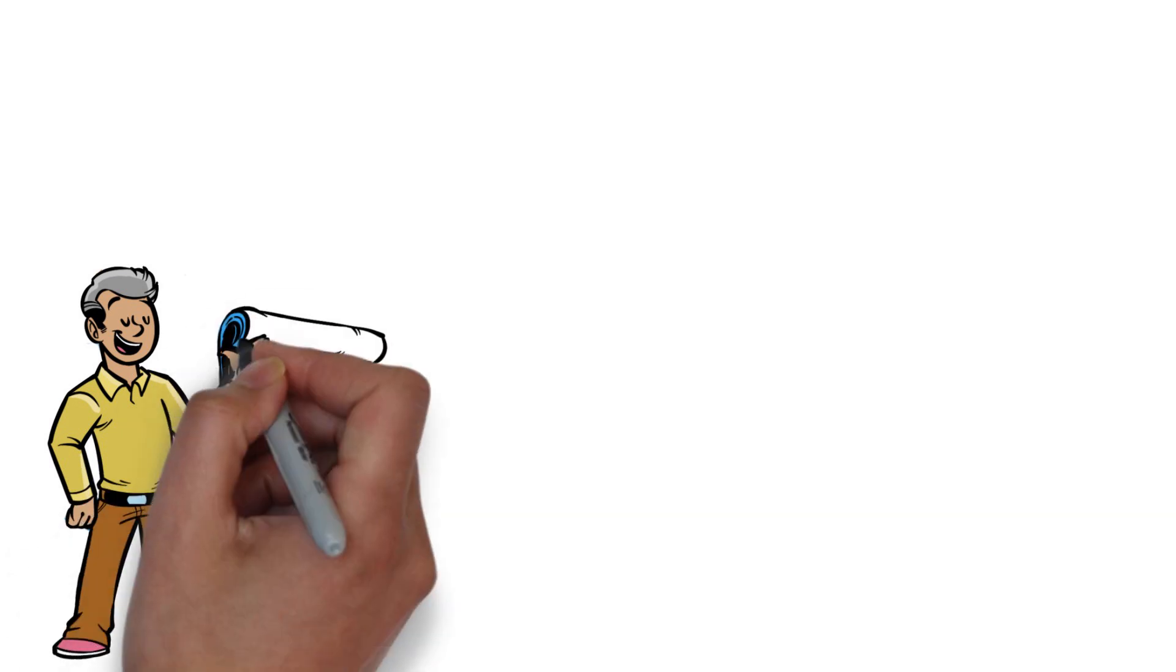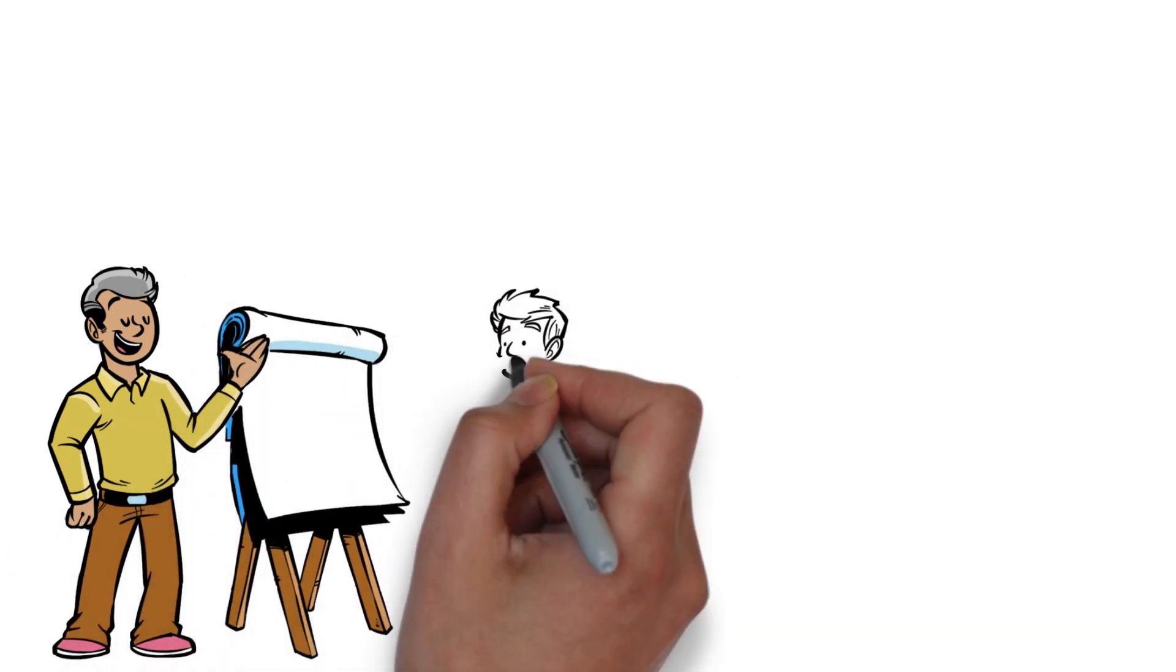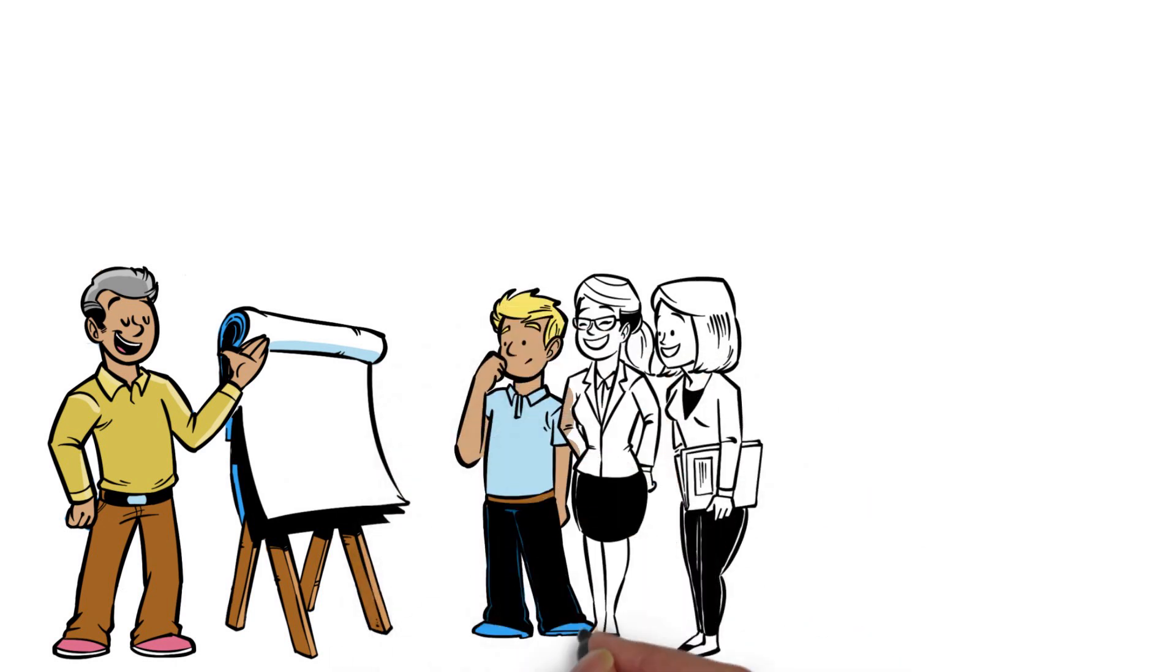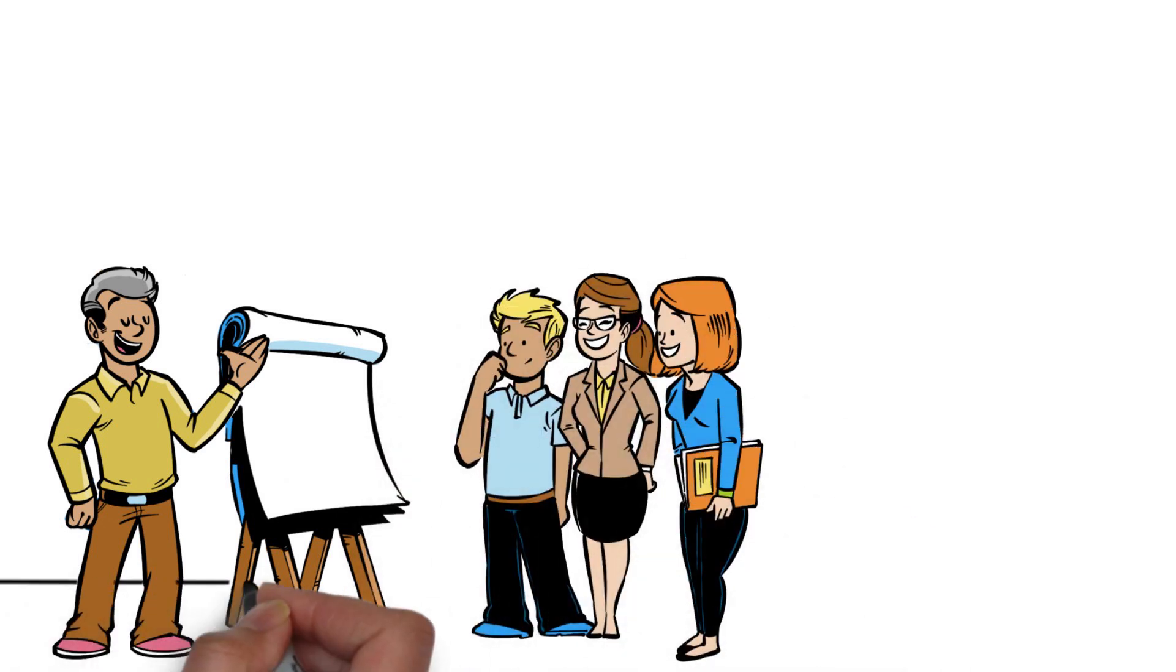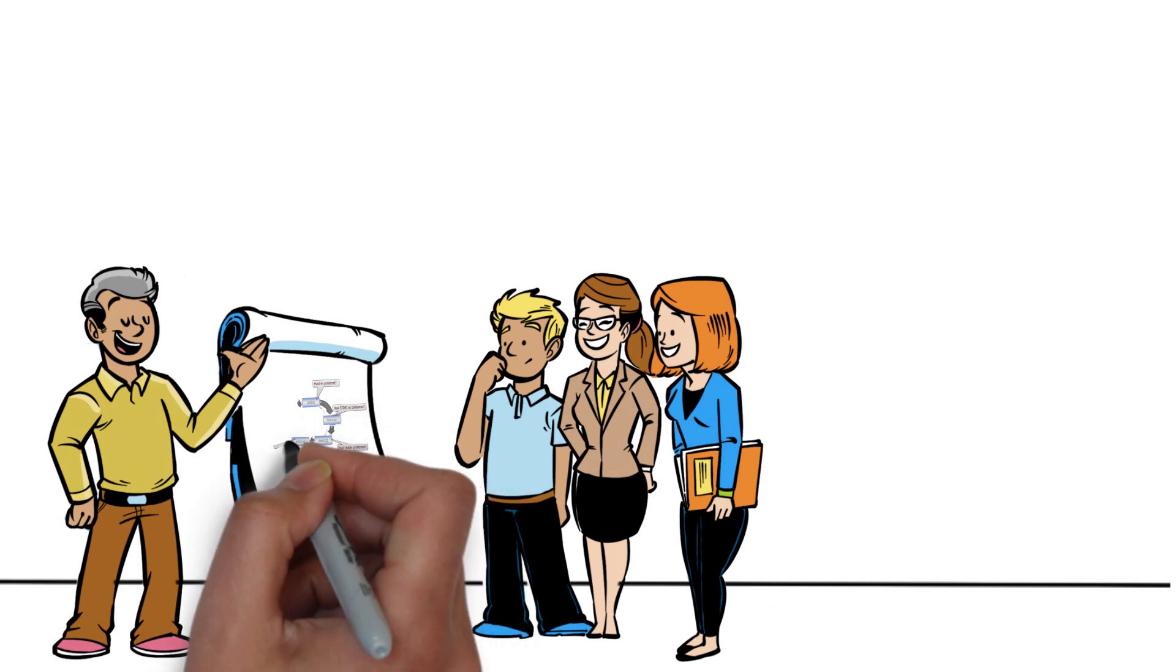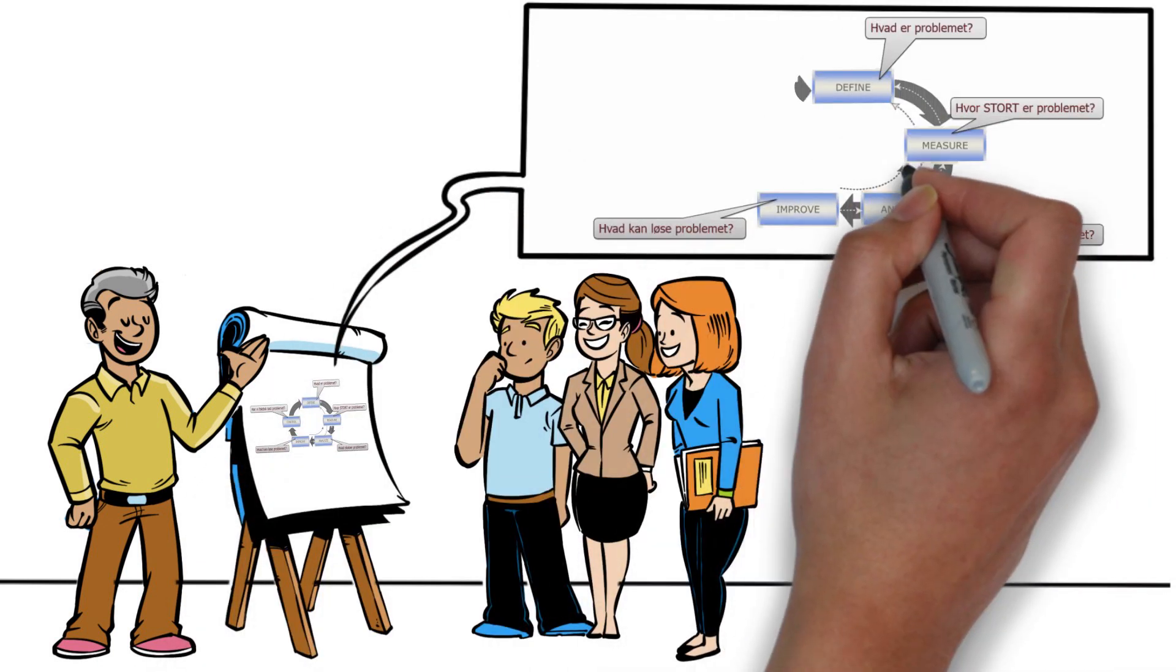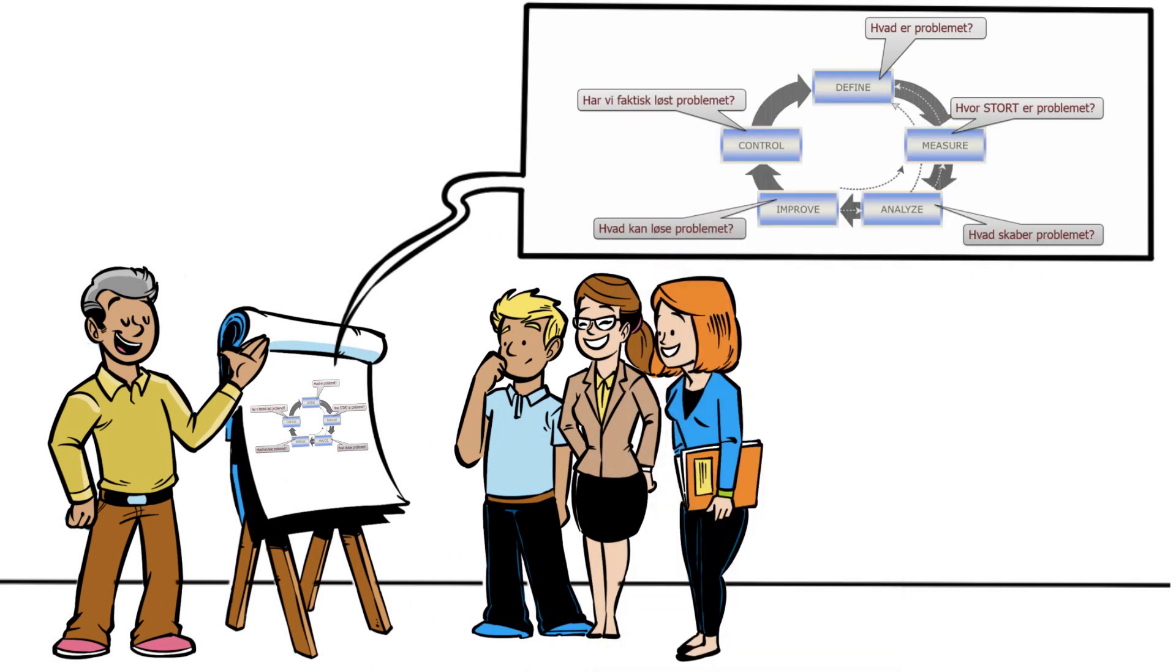DMAIC is a process improvement method, Mr. Storm explained. D stands for define what is the problem, M for measure how big is the problem, A for analyze what causes the problem, I for improve what can solve the problem, and C stands for control, have we fixed the problem. Let me show you in practice, Mr. Storm said.